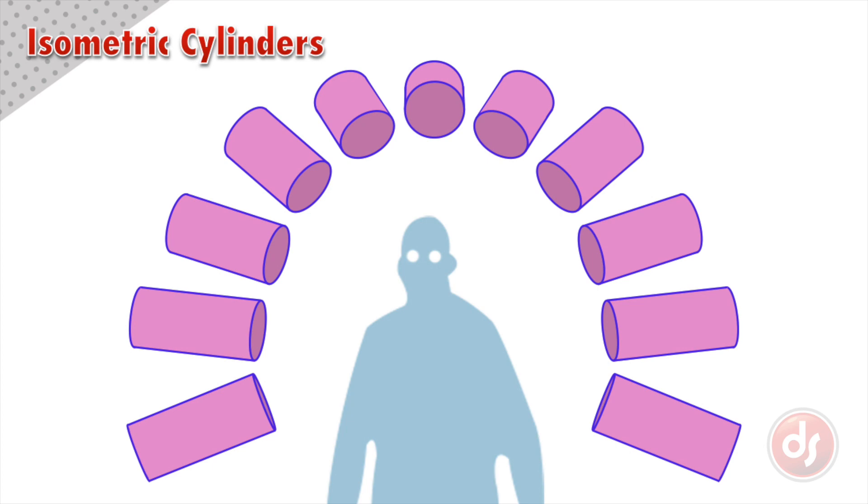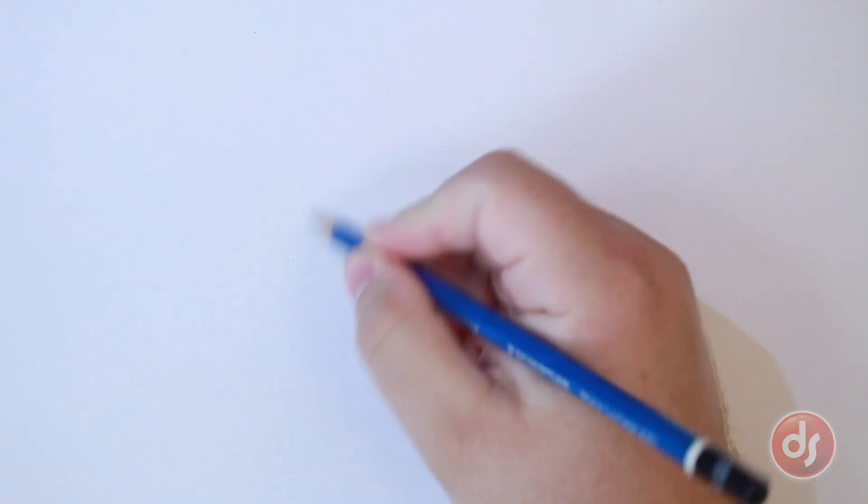Now let's practice drawing some ellipses and cylinders together. When you draw your ellipses, don't use just your fingers. Use your whole hand and arm in the motion.